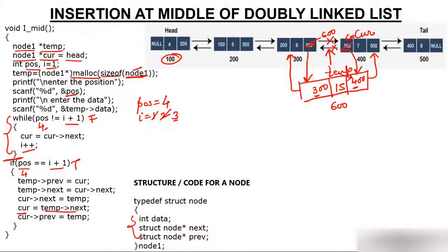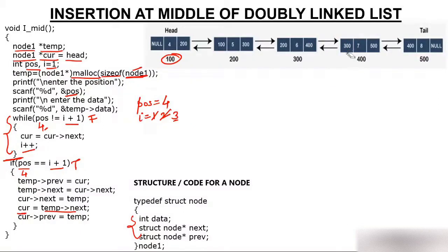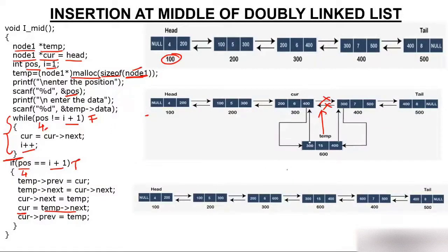There are many ways to make this connectivity — what matters is understanding the concept. Looking at the final figure, you can clearly see all the correct links. Node 15 (address 600) is now inserted at the 4th position: the list reads 4, 5, 6, 15, 7, 8. That's how you insert a node at the middle of a doubly linked list.